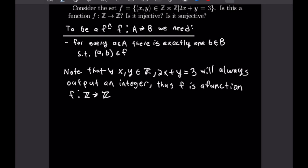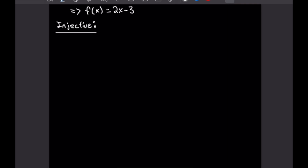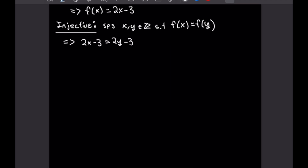Now that we know this is a function, let's go ahead and rewrite our function as f of x is equal to 2x minus 3, just to make it easier to work with. So now let's talk about injectivity. To prove injectivity, we're going to suppose we have f of x is equal to f of y, and then we want to show that x is equal to y. So suppose we have two integers x and y such that f of x is equal to f of y. Well, that means we have 2x minus 3 is equal to 2y minus 3. We can add 3 to both sides to see that 2x is equal to 2y, which of course means that x is equal to y. So that's all we need to do to prove injectivity.